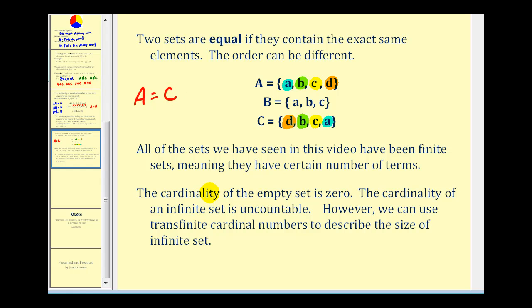The last thing I want to mention is that all of the sets we have seen in this video have been finite sets, meaning they have a certain number of elements or terms. The cardinality of the empty set is zero because the empty set has zero elements, but the cardinality of an infinite set we say is uncountable. However, we can use something called transfinite cardinal numbers to describe the size of an infinite set. But right now we're just going to identify the cardinality of an infinite set as uncountable.